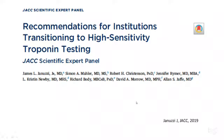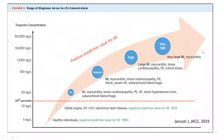A more recent study published this year — with very new literature — shows that the 99th percentile is around 20 to 25. Healthy patients have a troponin around five. Patients with stable angina, heart failure, or left ventricular hypertrophy may have troponins around 10.